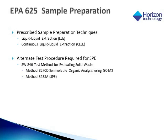EPA Method 625 is a prescriptive method, meaning that any variance from the method, such as using an alternative sample preparation technique like SPE, requires the laboratory to apply to the EPA for an alternate test procedure, ATP. EPA Method 8270D for semi-volatile organic analysis by GC-MS using the EPA SPE method 3535A is often used for ATP purposes. Both methods fall under the solid waste SW846 umbrella for analytical methods.